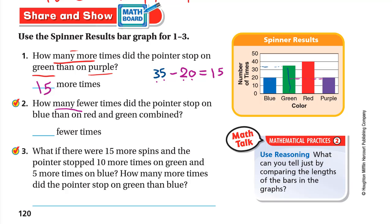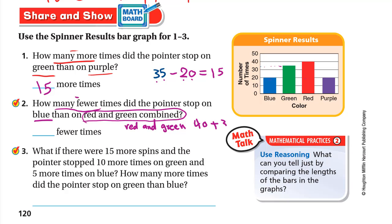Number two: how many fewer times did the pointer stop on blue than on red and green combined? We find red and green together. Red is 40, green is 35, so 40 plus 35 equals 75. Then we subtract the blue: 75 minus 20 equals 55. The pointer stopped 55 fewer times on blue than on red and green combined.